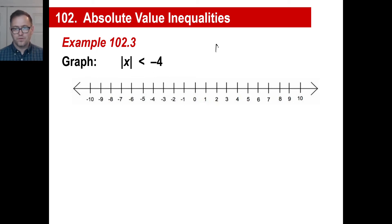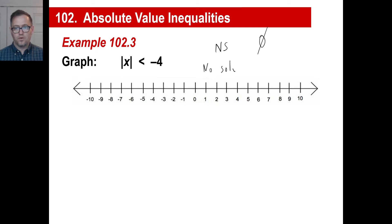So there is no solution. If you want, you can put NS for no solution, or a zero with a little slash through it, or just write 'no solu...' and abbreviate it. So you don't waste all that time — it looks like no solution. It doesn't work.